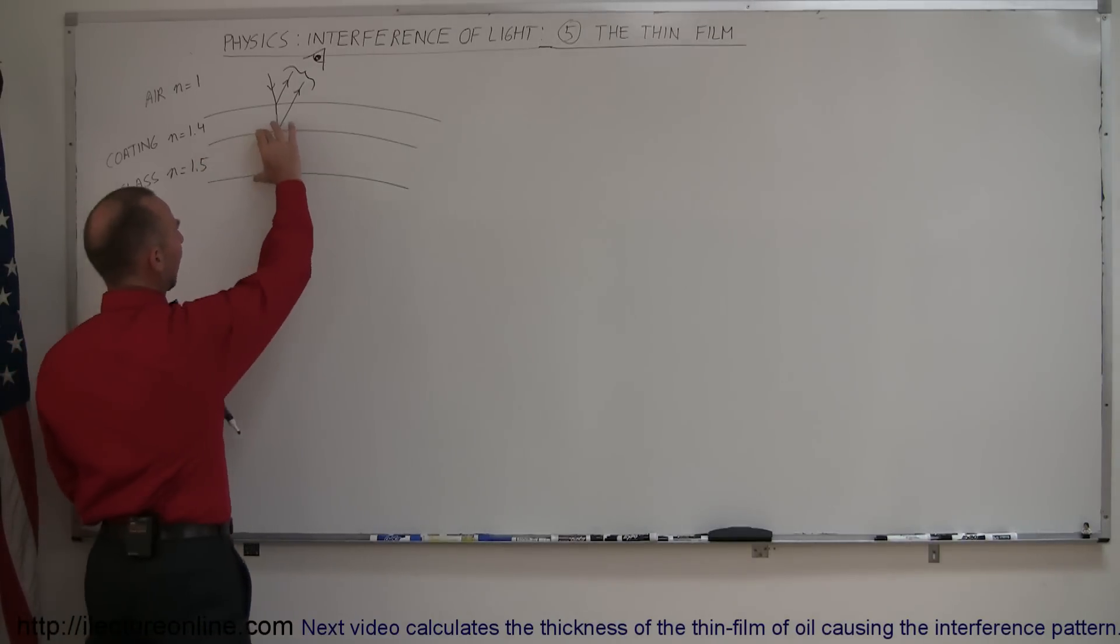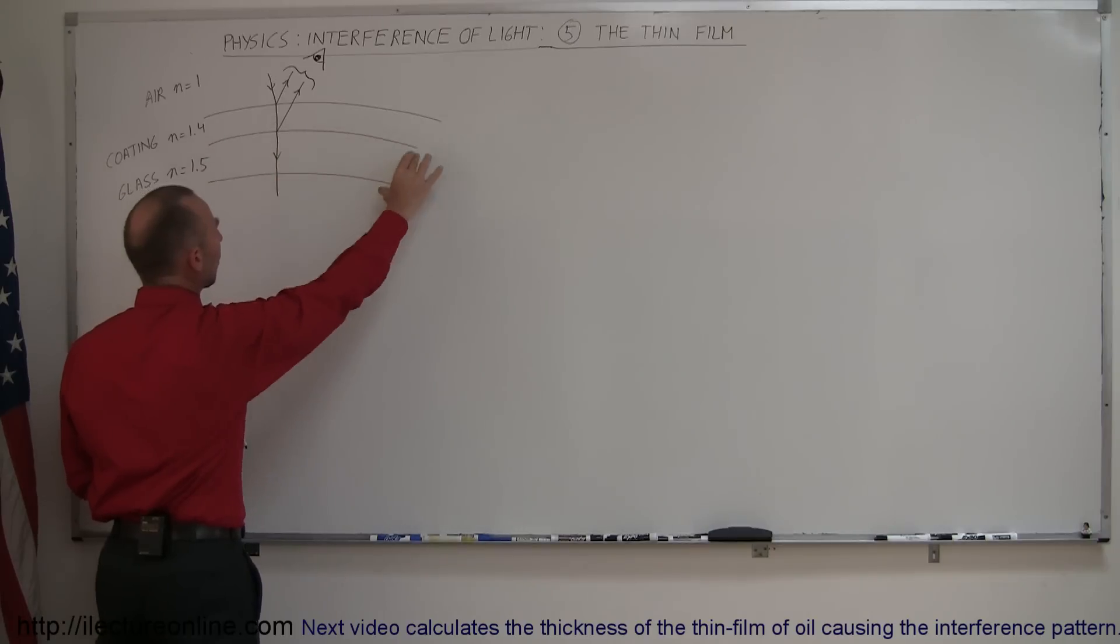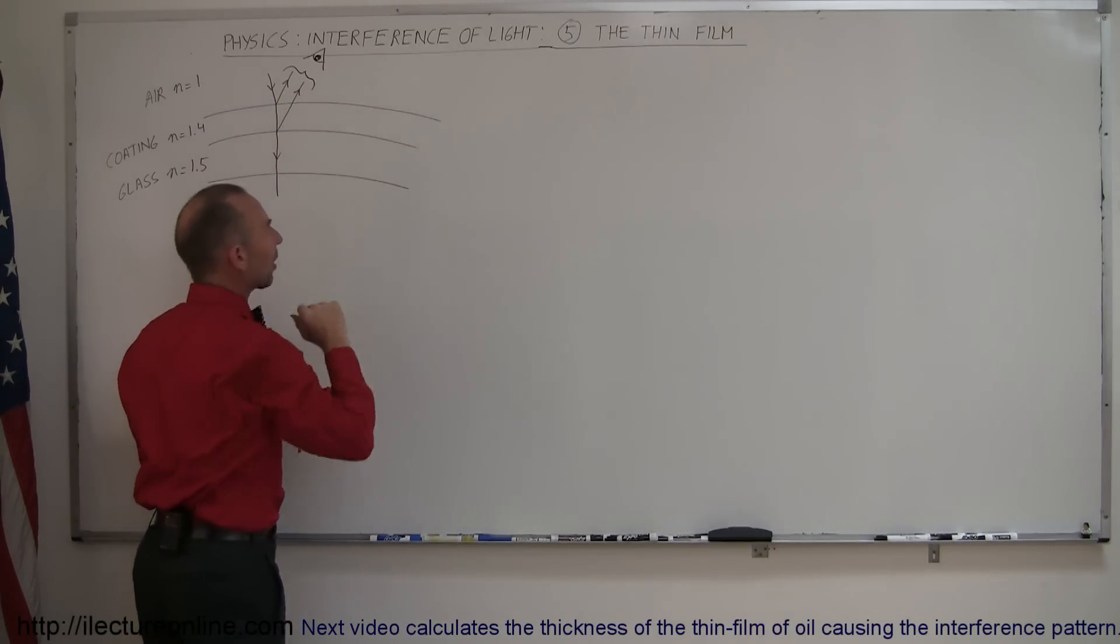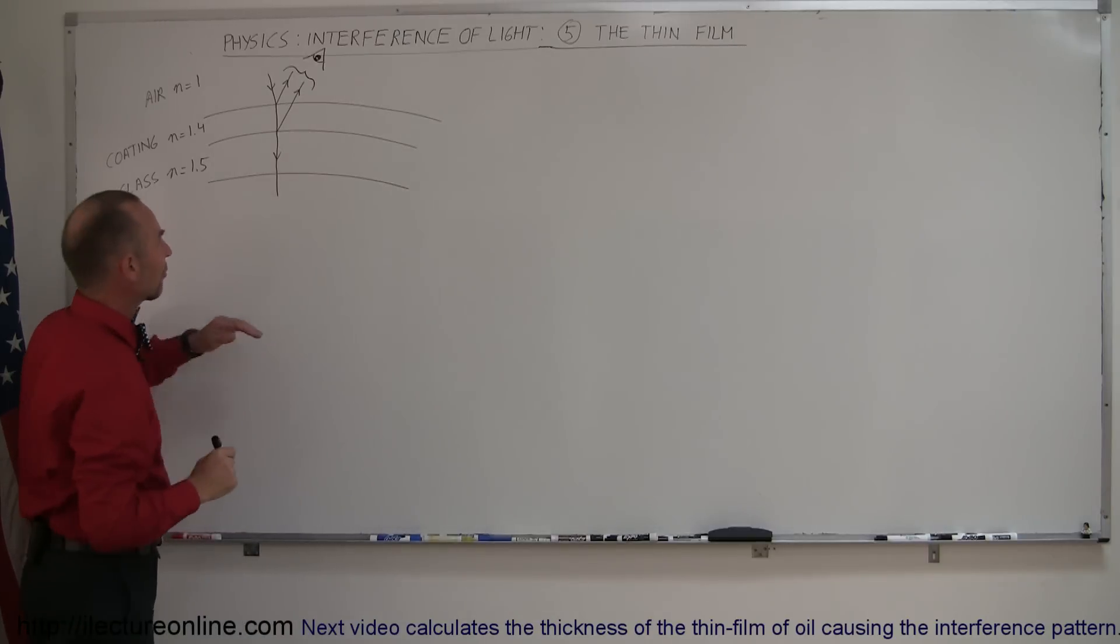So let's say we have a glass, this could be a lens or this could be a window or anything like that. And we put a small thin layer of some material on there that has a different index of refraction of either the air or the glass.